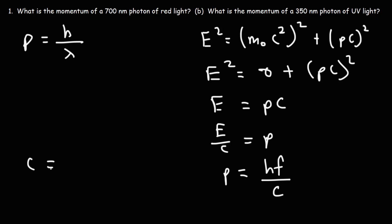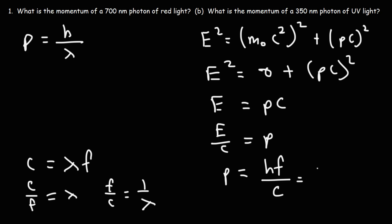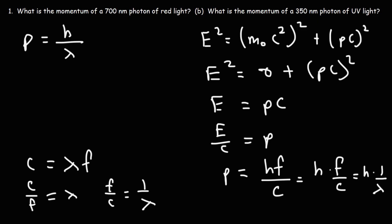Keep in mind, the speed of light is equal to the wavelength of a photon times its frequency. So if we isolate lambda, it would be c over f. If we raise both sides to the negative one, we get that f over c is 1 over lambda. So we can write this as h times f over c, and replace f over c with 1 over lambda, giving us h times 1 over lambda. So the momentum of a photon is Planck's constant divided by the wavelength.